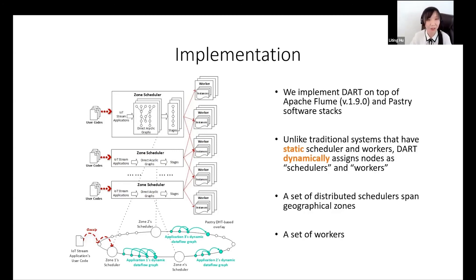Unlike traditional systems that manually assign static schedulers or workers, DART will dynamically assign roles of schedulers and workers. When a new application joins, it needs to look for the nearby scheduler by using the GOSSIP protocol. If there is no nearby scheduler, the system will create a new scheduler in that zone.